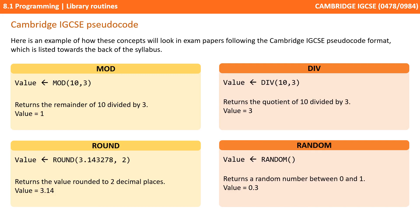Random, on the other hand, returns a random number between 0 and 1 inclusive. For example, if we set value equal to the result of calling the random function, value might be assigned the number 0.3.